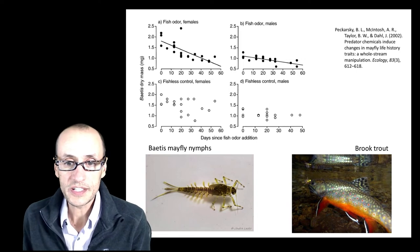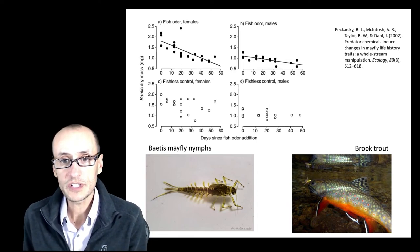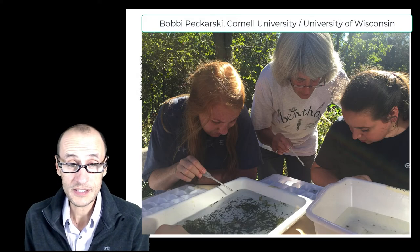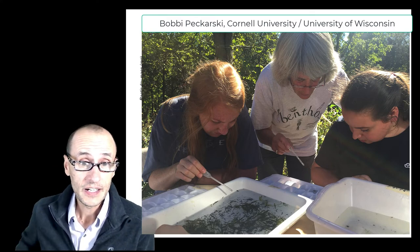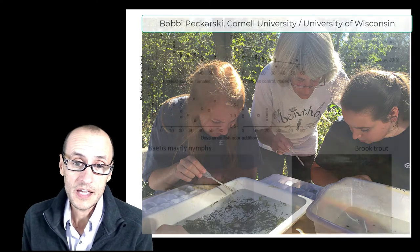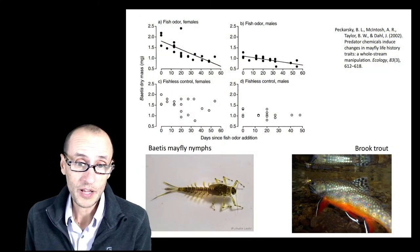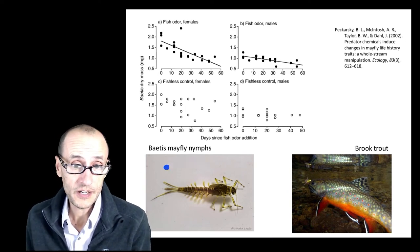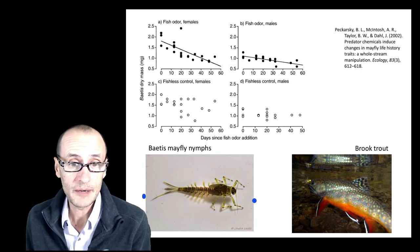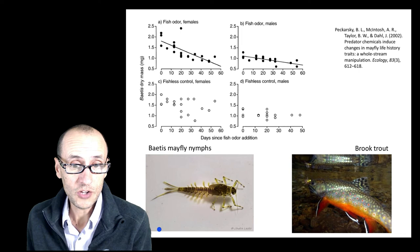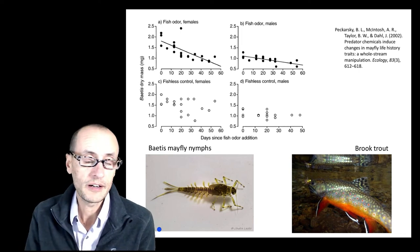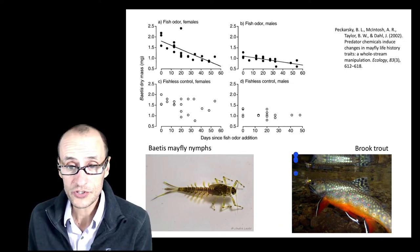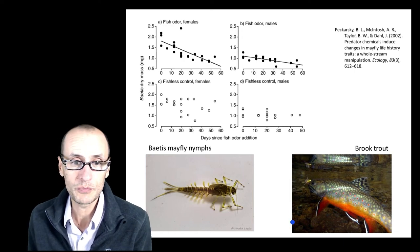Another person who did some really seminal work in this particular field is Dr. Bobby Pekarsky, then at Cornell University. And hopefully you'll get a chance to meet Bobby, who will be visiting our class. And Bobby is an aquatic ecologist, aquatic entomologist, working on herbivores of aquatic systems. Things like mayflies and other aquatic larvae that feed on algae and other aquatic plants and are fed upon in turn by a range of predators, including fish like this wonderful little brook trout here.